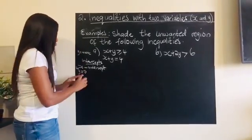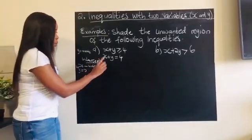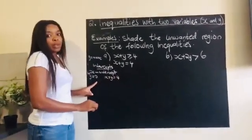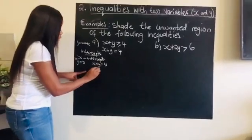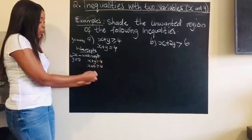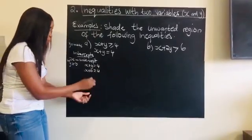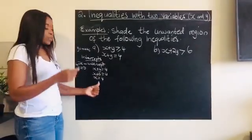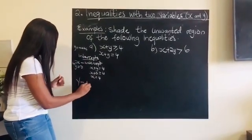So I let y equal to zero. Our equation is x plus y equal to four. If I let y be zero, I have x plus zero equal to four. Taking away zero is taking nothing from four, so x equals four. That's where the graph cuts the x-axis.